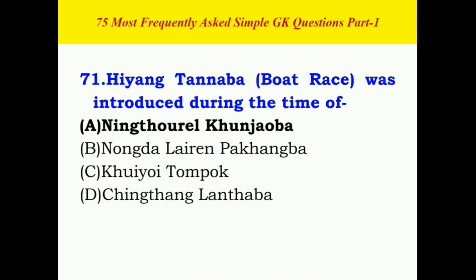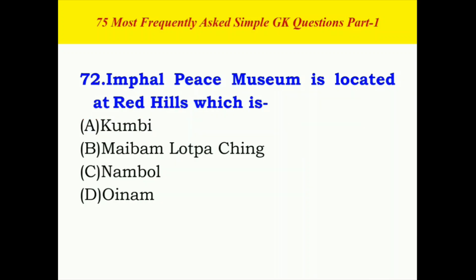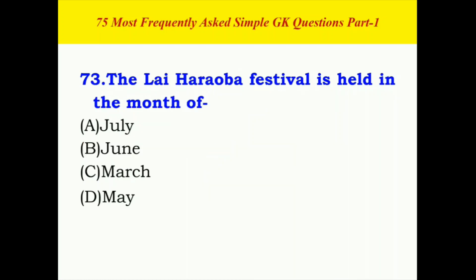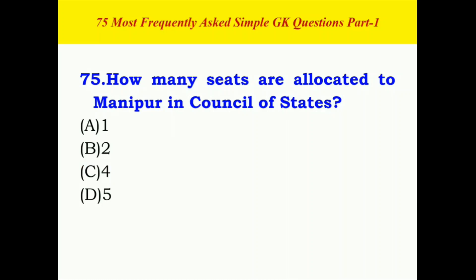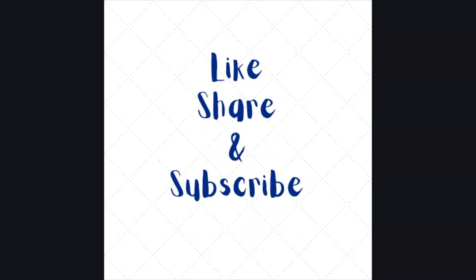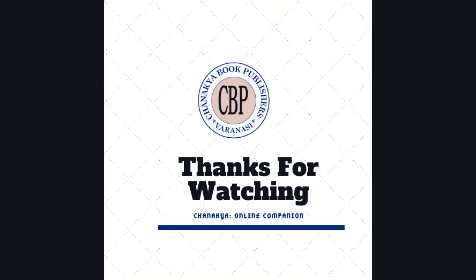The correct answer is B. The correct answer is A. Imphal East Museum is located at Red Hills — the correct answer is B. The Laai Haraoba festival is held in the month of — the correct answer is D. Kut festival of Kuki-Chin-Mizo — the correct answer is C. How many seats are allocated to Manipur in the Council of States? The correct answer is A.